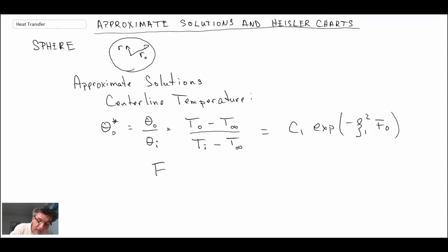Fourier number: alpha the thermal diffusivity times the time divided by the outer radius of our sphere squared. Biot number we need, and that is h R naught—that's your convective heat transfer coefficient—R naught is the outer radius divided by the thermal conductivity of the solid. The reason why you need Biot is because C1 and zeta come from tables, and those tables are functions of the Biot number.